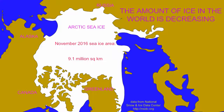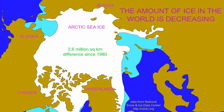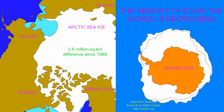If one were to compare the amount of ice in the Arctic in the year 1980 — 11.7 million square kilometers — and compare that to the value in 2016 of 9.1 million square kilometers, there is a difference of 2.6 million square kilometers. In November 2016, the greatest decrease in the amount of sea ice around Antarctica was also observed.